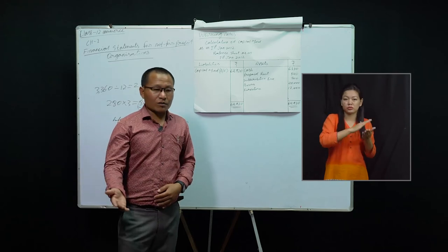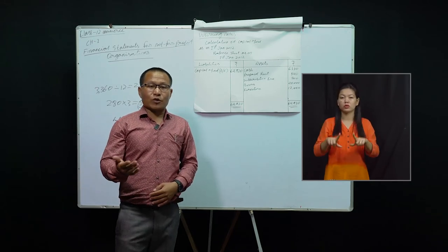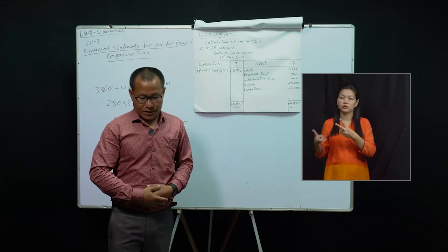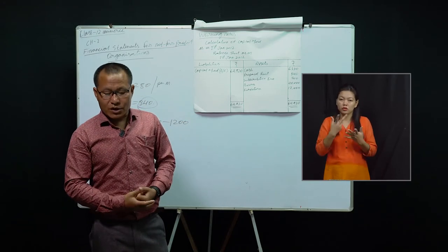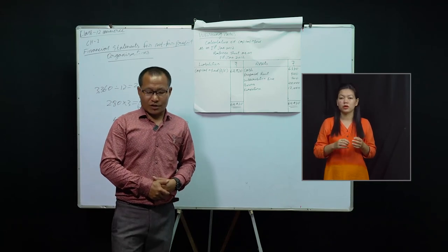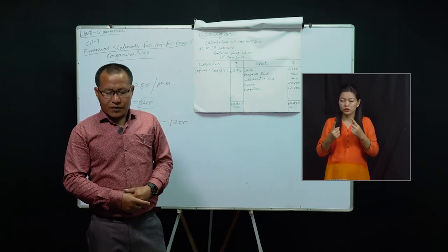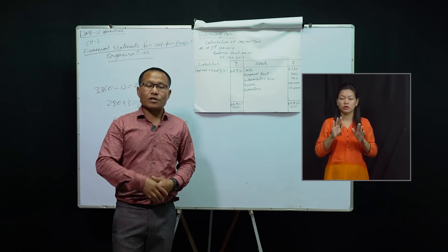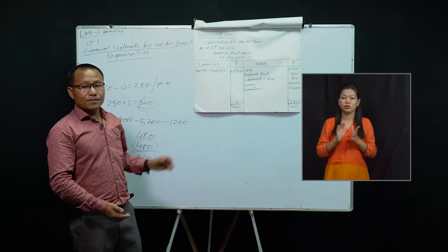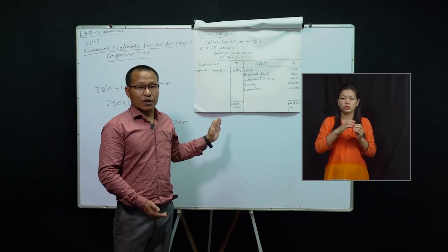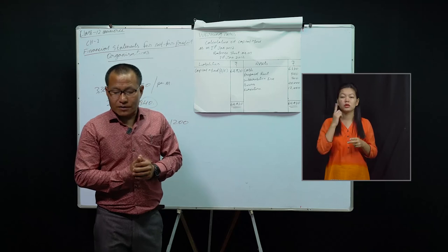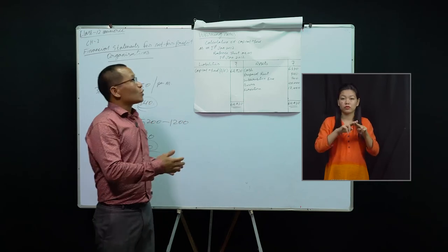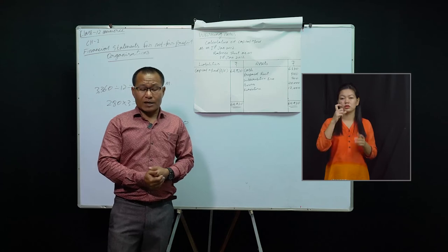The income and expenditure account is like a profit and loss account. Just as a profit and loss account is prepared in trading to find profit or loss, in a not-for-profit organization we prepare an income and expenditure account to find surplus or deficit. A surplus means excess of income over expenditure, shown on the debit side; a deficit means excess of expenditure over income, shown on the credit side.